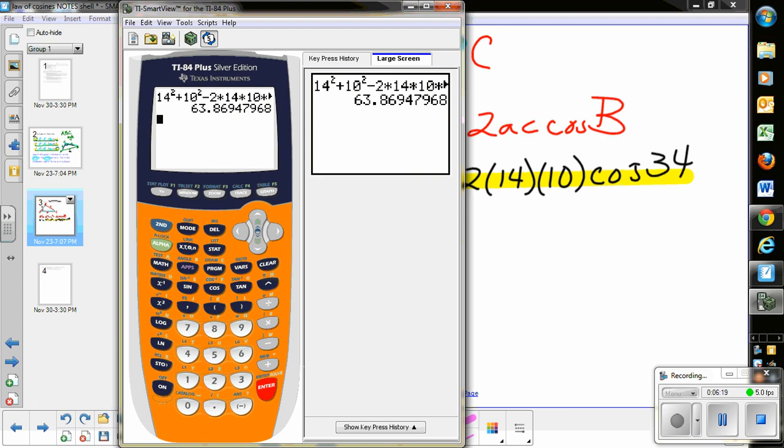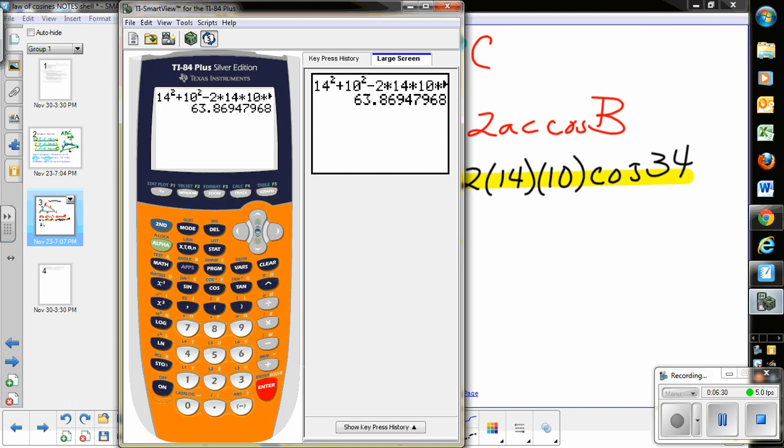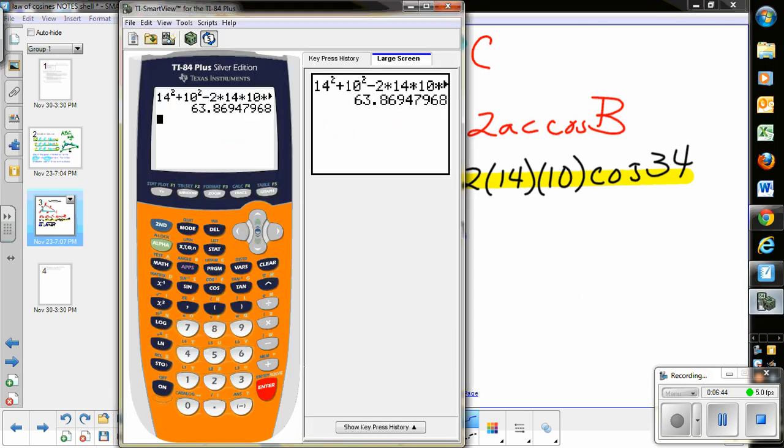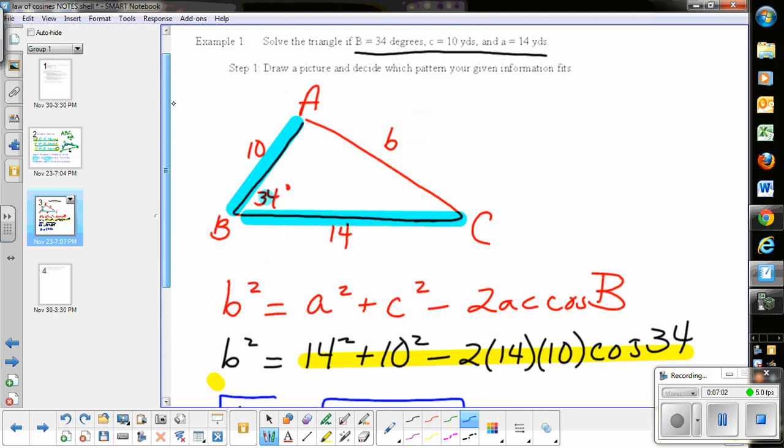I get that number, but that's not quite my solution. This side said b². So I now know b² equals 63.864, but that's not just b. If I want b by itself, I need to take the square root. On my calculator, I take the square root of that answer. Now that's my solution, which I'll round to 7.9. In my picture, I now know this side.